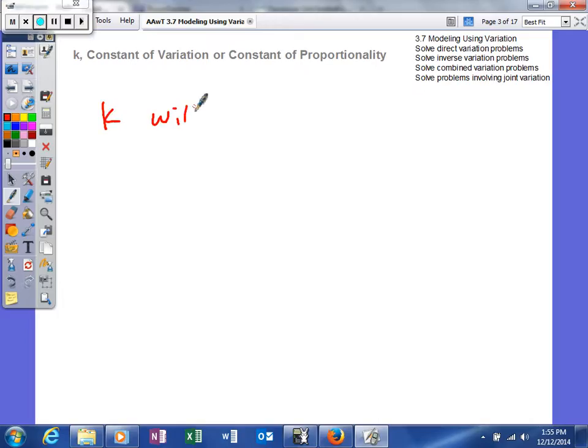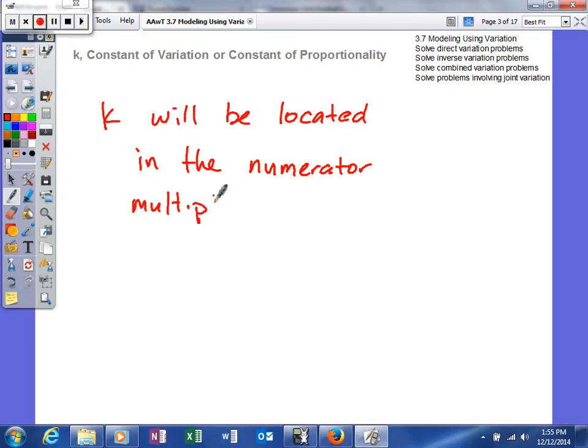And what you need to know is that this K will be located in the numerator, multiplied by anything else also in the numerator.